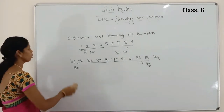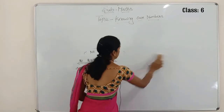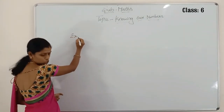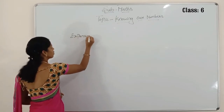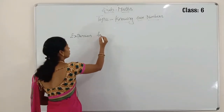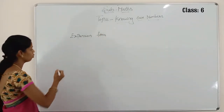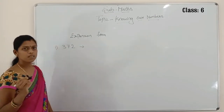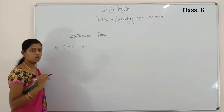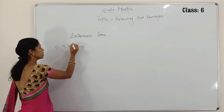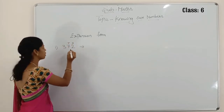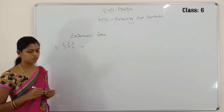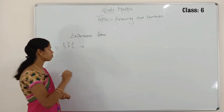Now we go to the expansion of numbers. In the previous class you learned about the expansion of numbers. So I am giving some examples now. First I am taking the 3-digit number 372. Always you have to take the place values of the numbers. 2 is in the ones place, 7 is in the tens place, 3 is in the hundreds place. In the expanded form there are 2 methods.